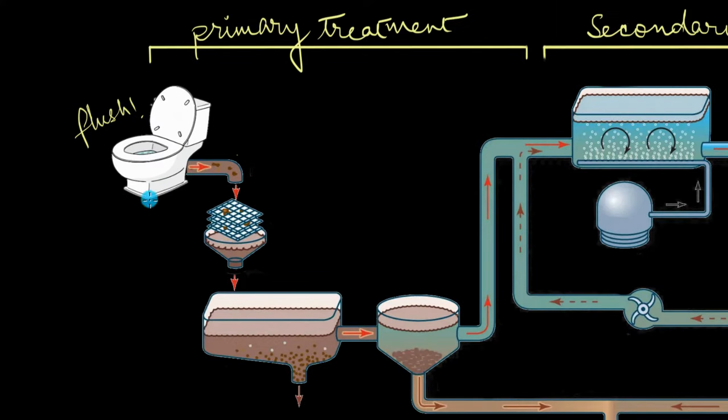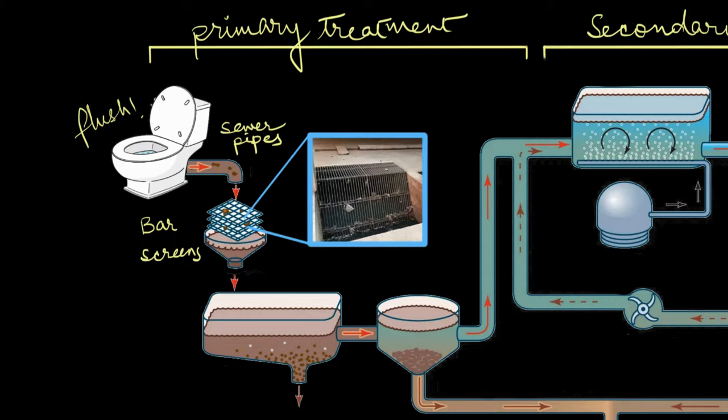When you flushed down last night's dinner, it got collected by the sewer pipes. These pipes are part of an intricate network called the sewage system, which collects wastewater from all kinds of establishments. All of this collected wastewater or sewage passes through bar screens. Bar screens are these vertical bars which trap all the larger solid stuff like plastic, cans, bottles, wood, tissues, etc. We commonly call this step the pre-treatment step.